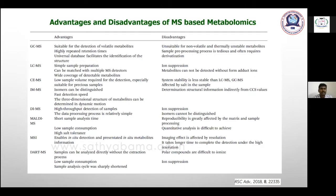Compared to GC-MS, LC-MS has simpler sample preparation and can be matched with multiple MS detectors. In GC-MS we can use FID, while different detectors are available for different targets. The key difference: GC-MS is for volatile compound analysis, LC-MS is for non-volatile compound analysis. LC-MS can detect higher molecular weight compounds; GC-MS is for small molecules with a mass-to-charge ratio range of approximately 40–1000.